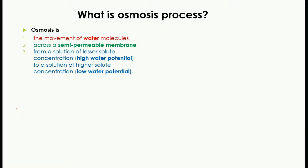In this video we are going to study what is the osmosis process. Talking about the definition of osmosis, there are three main points which must be included in the definition. The first is the movement of water molecules across a semi-permeable membrane from a solution of less solute concentration, or in other words high water potential, to a solution of higher solute concentration or low water potential.